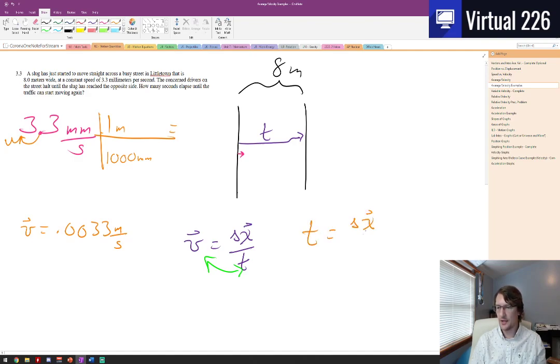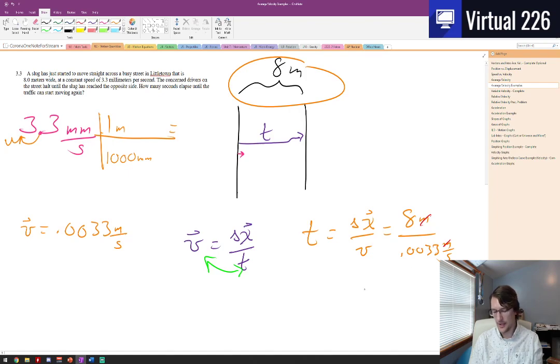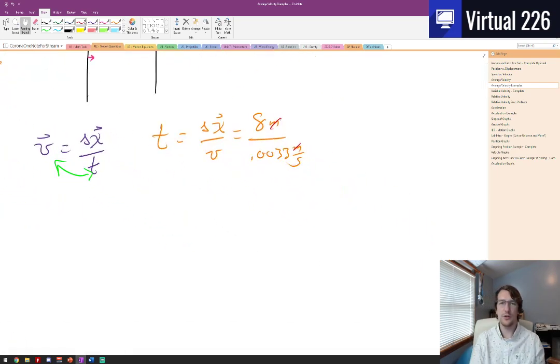So in our case here we know delta x, that's gonna be our eight meters in this problem, and we know the super slow pace of the slug, 0.0033 meters per second. We're gonna see that our meters are gonna go away, our seconds is gonna come back up just like we want it to. And now eight divided by 0.0033 is gonna give us the short time of 2,424 seconds.